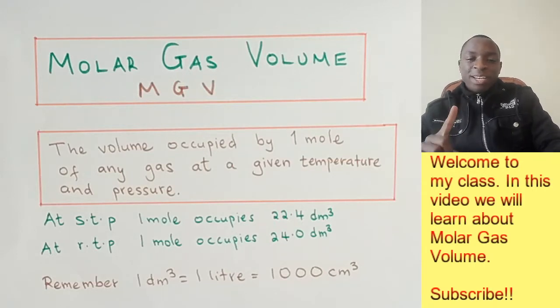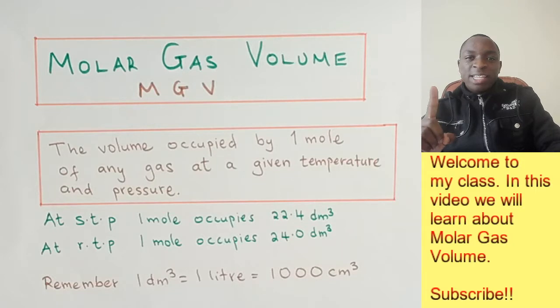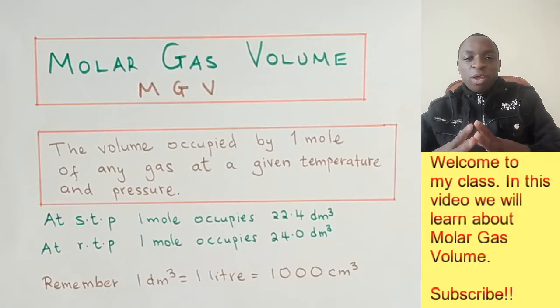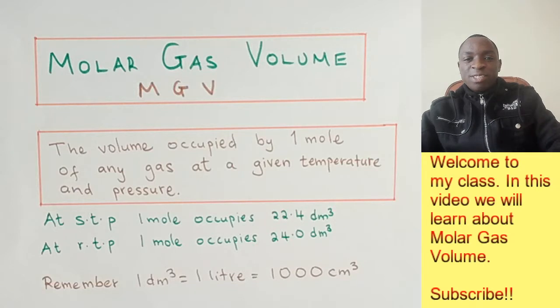Remember, 1 dm³ equals 1 liter and equals 1000 cm³. With this knowledge, we're going to see how to apply it in a few questions to find the solutions. So let's get right to the first example.